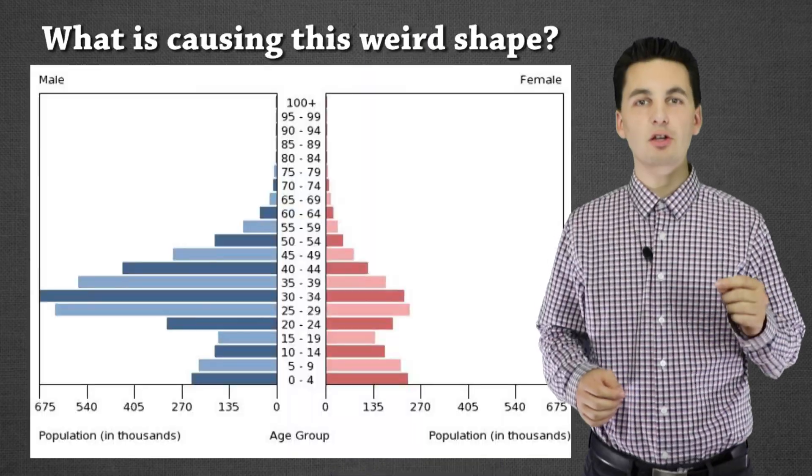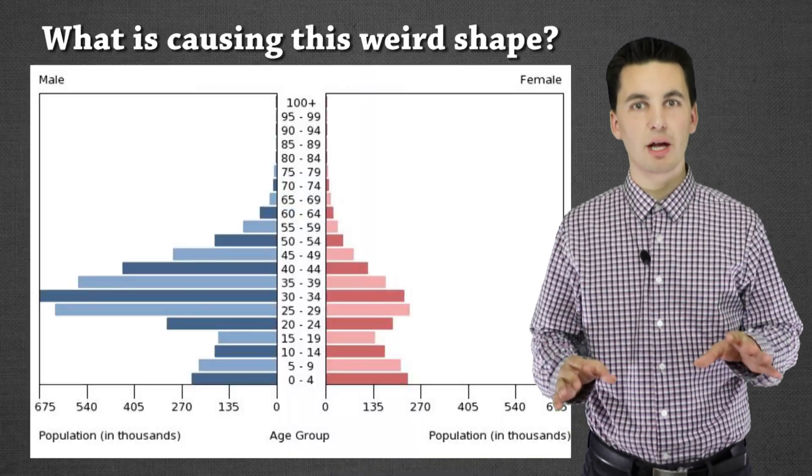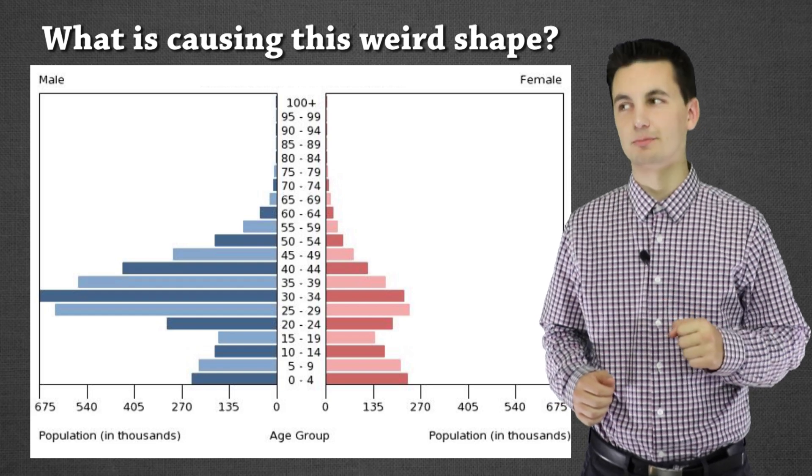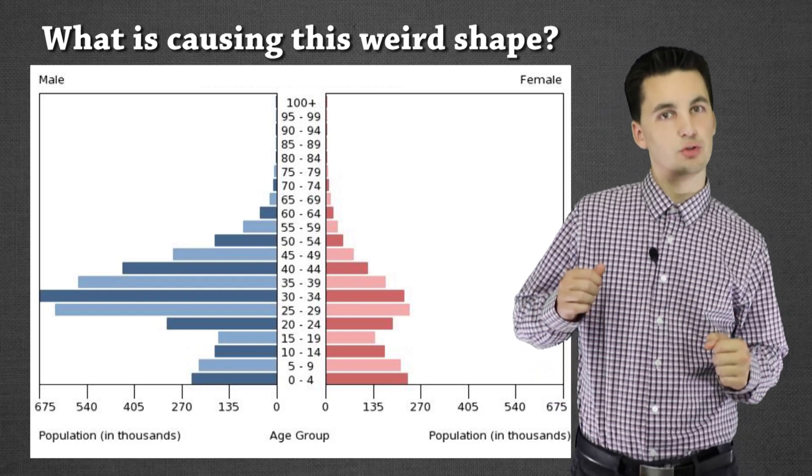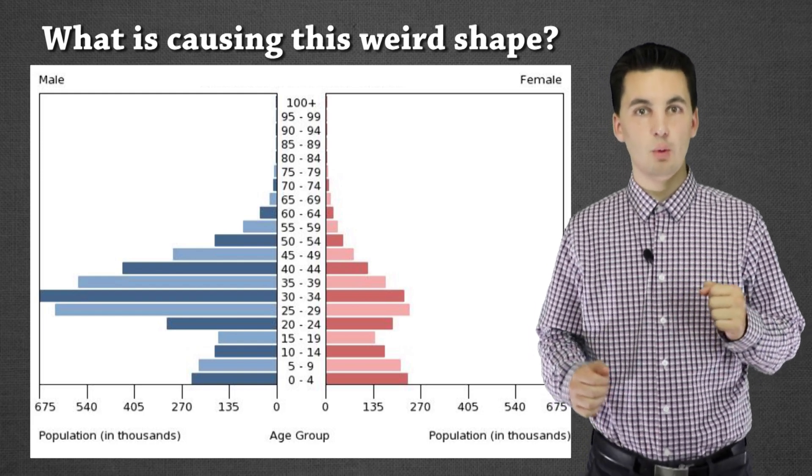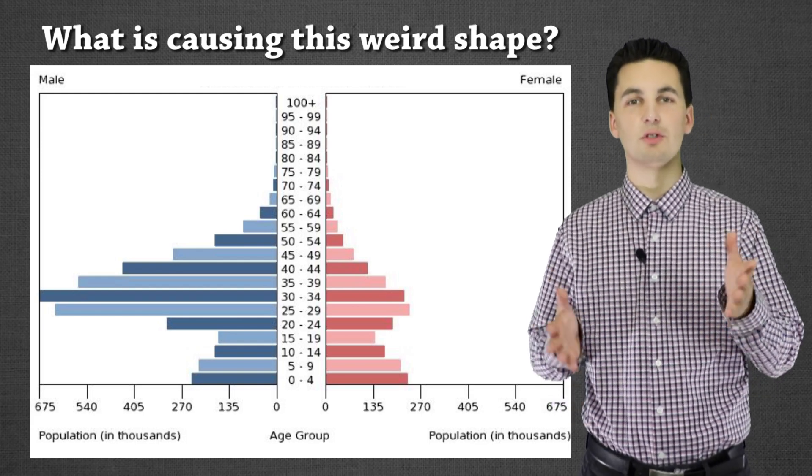Earlier I mentioned population pyramids with irregular patterns. Here's an example — take a second to analyze this chart. Think about what could cause this shape, looking at the years people are present, the sex of who's coming and going. Pause the video, analyze the chart, and think about what's going on.